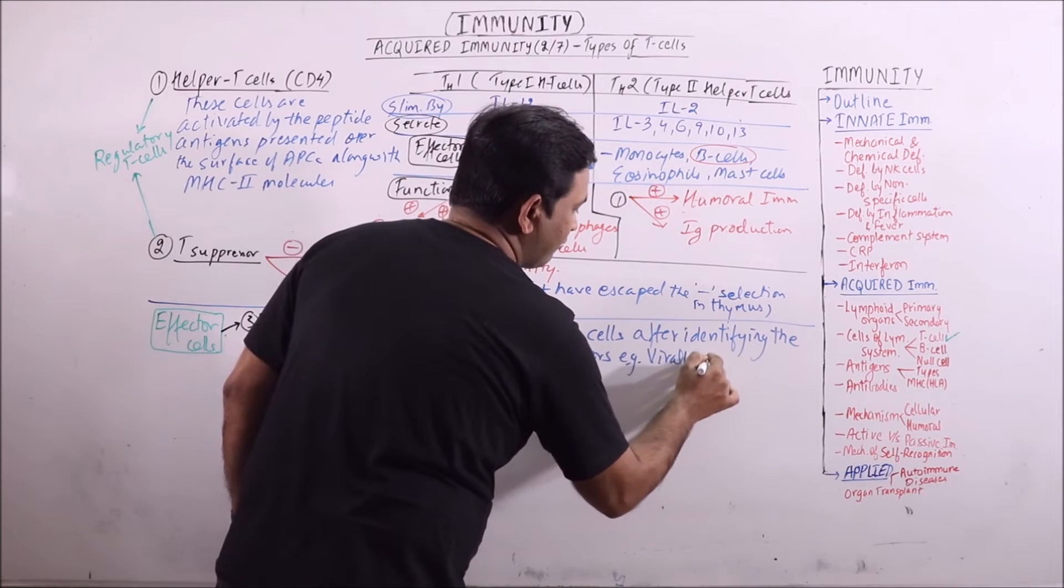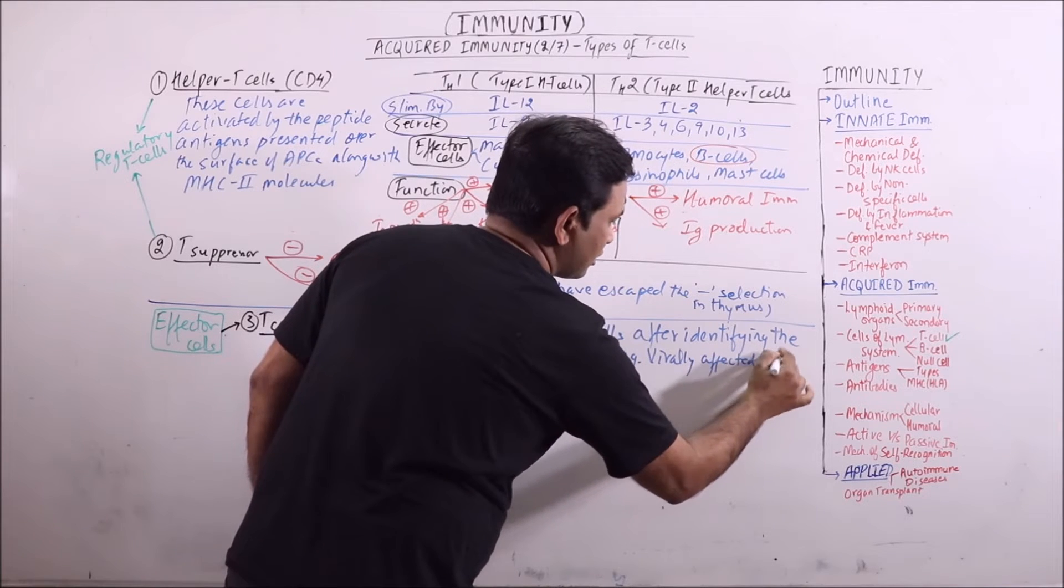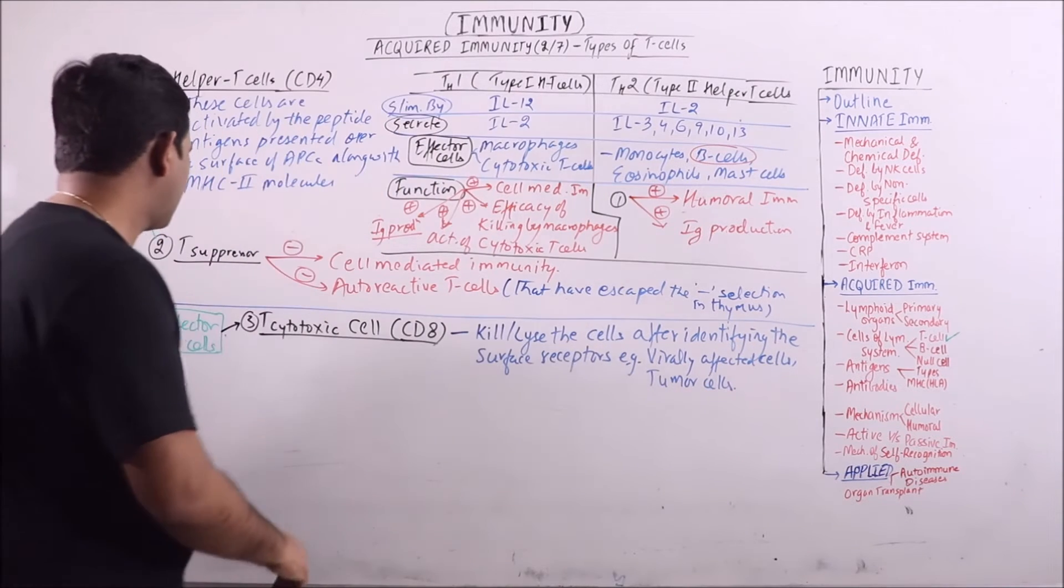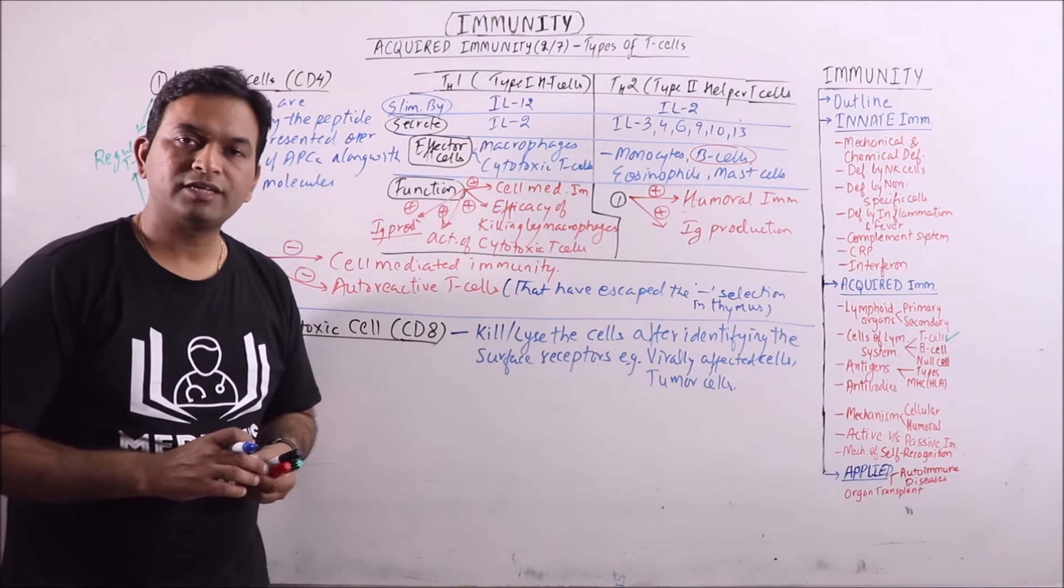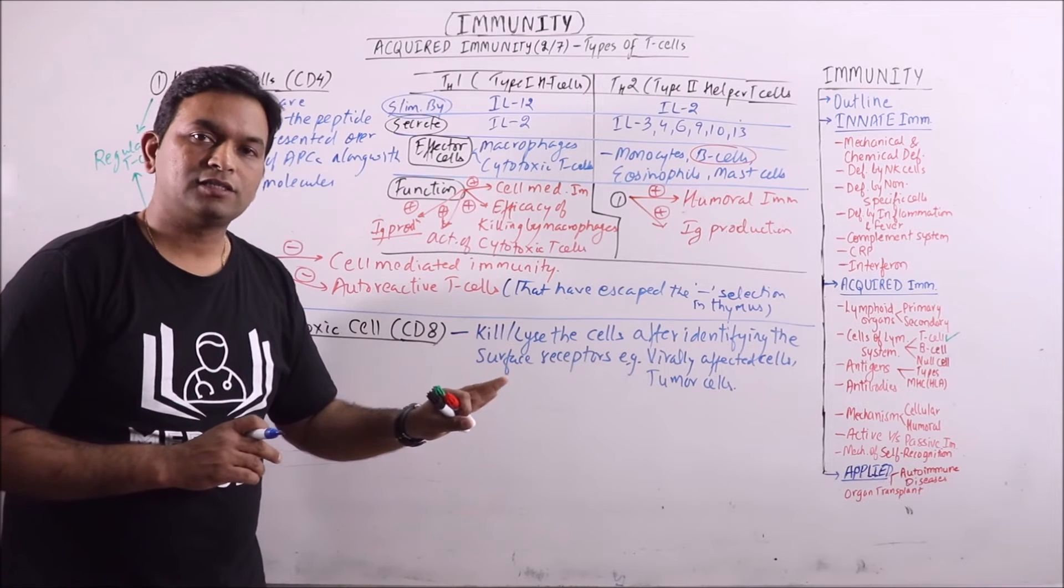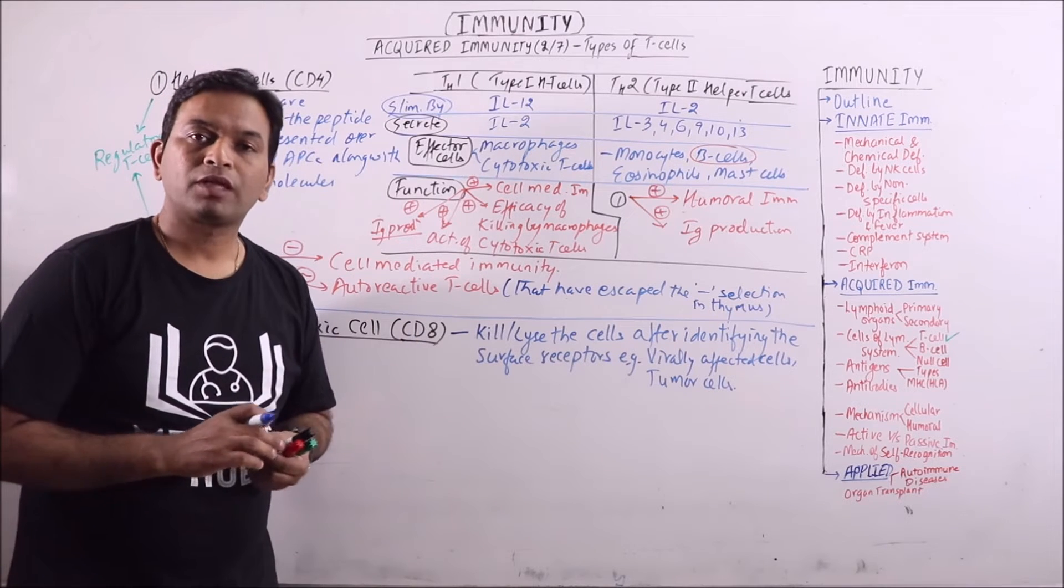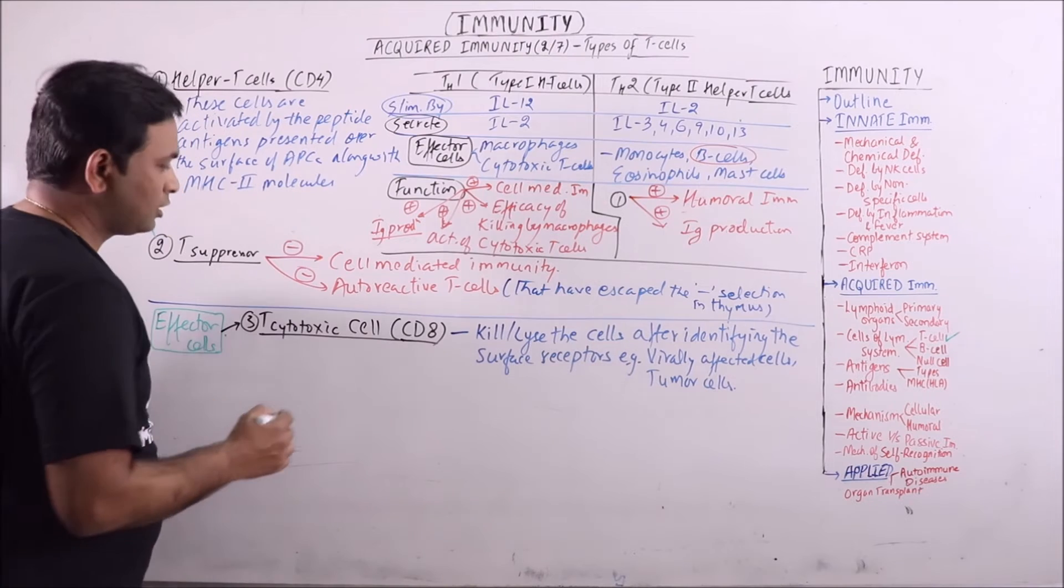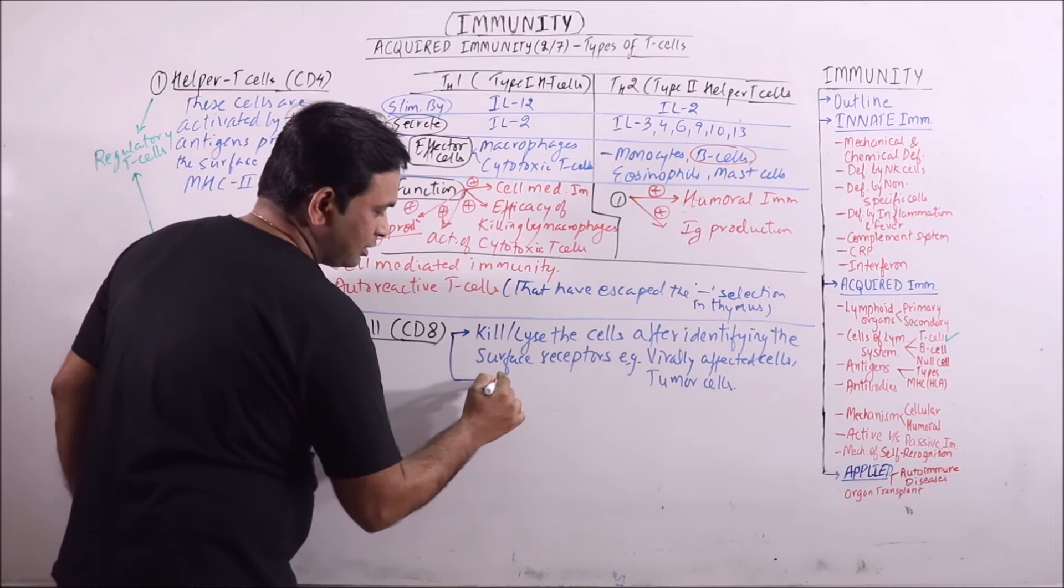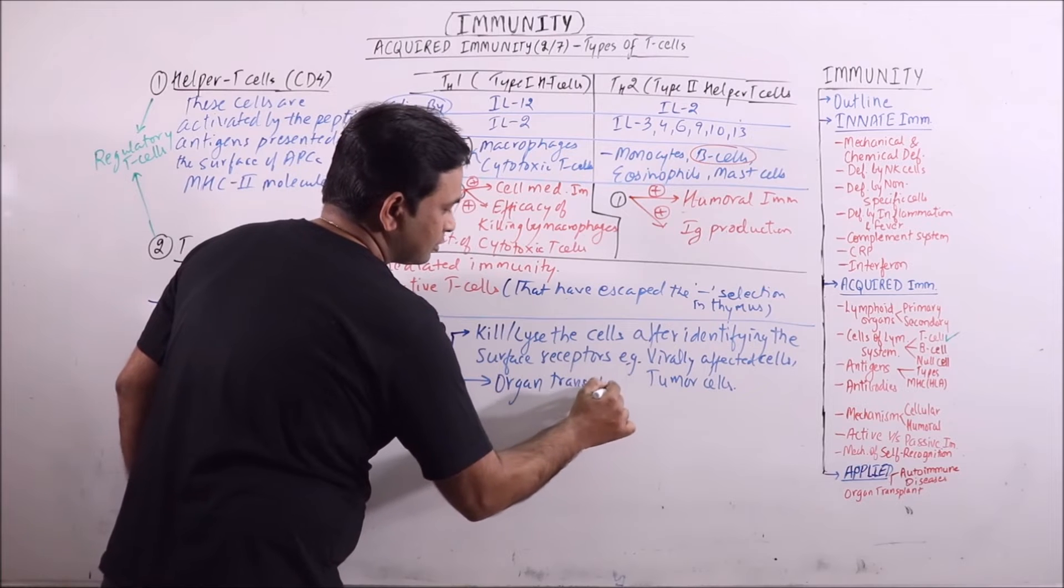For example, virus or virally affected cells, or the tumor cells. This identification is done by attachment of cytotoxic T-cells with the antigens presented on all nucleated cells of our body, which are associated with MHC1 molecules. Another role of cytotoxic T-cells is in organ transplant rejection.